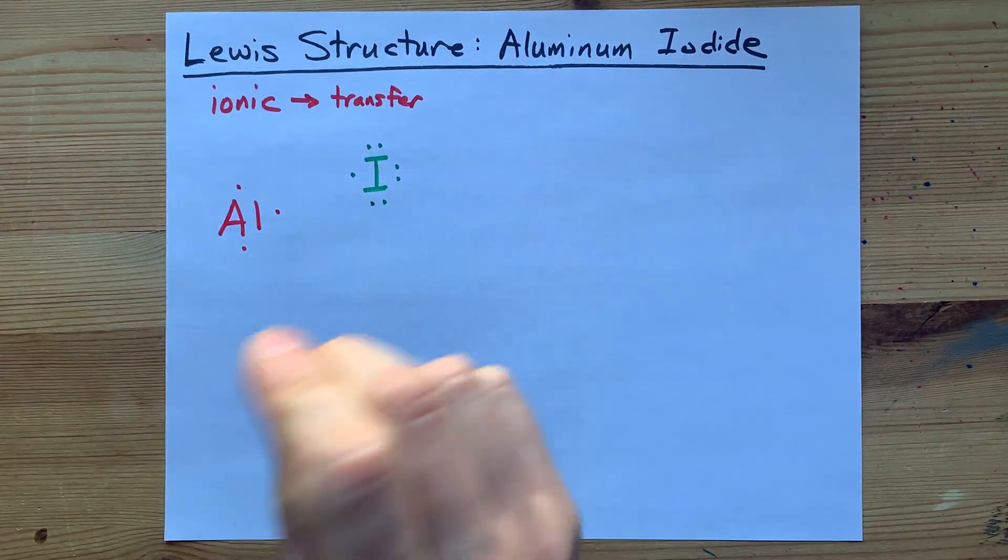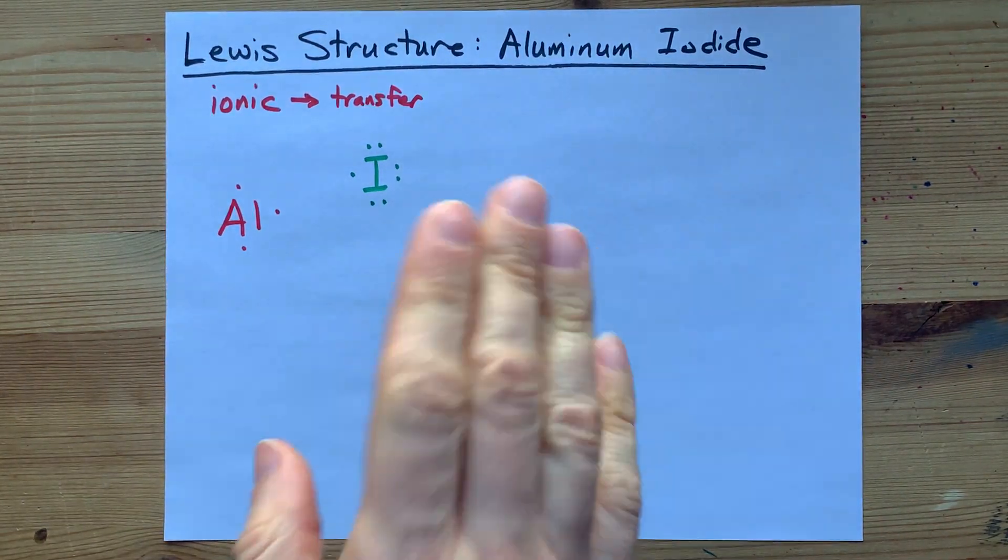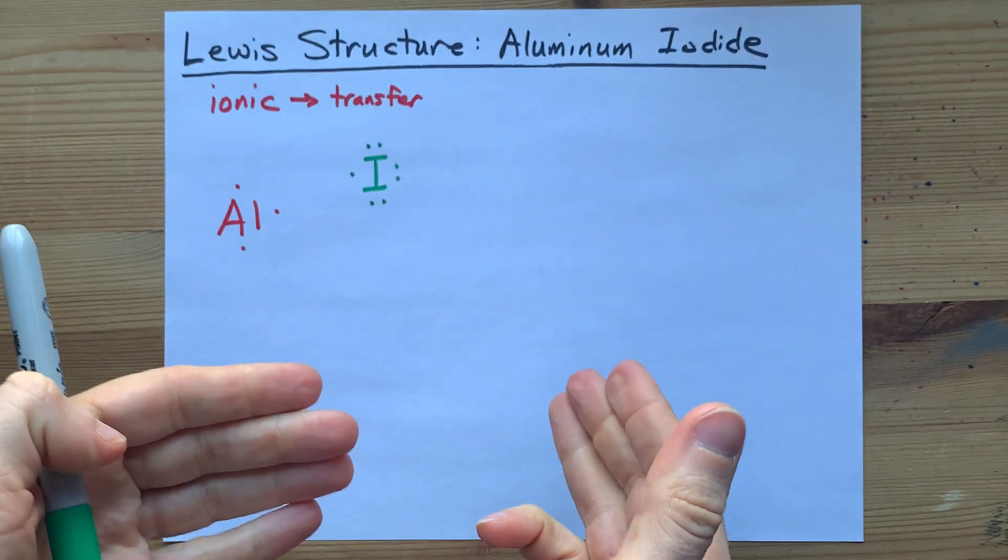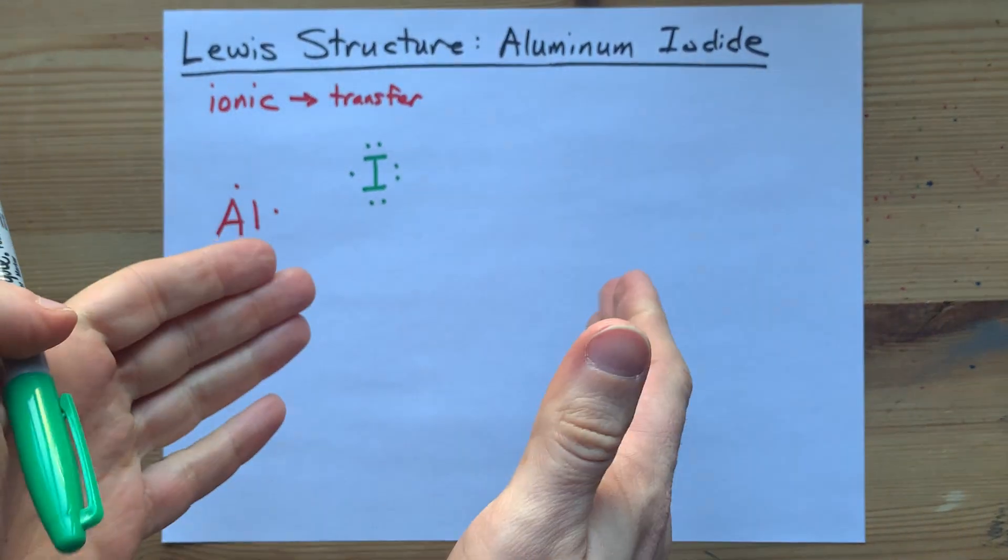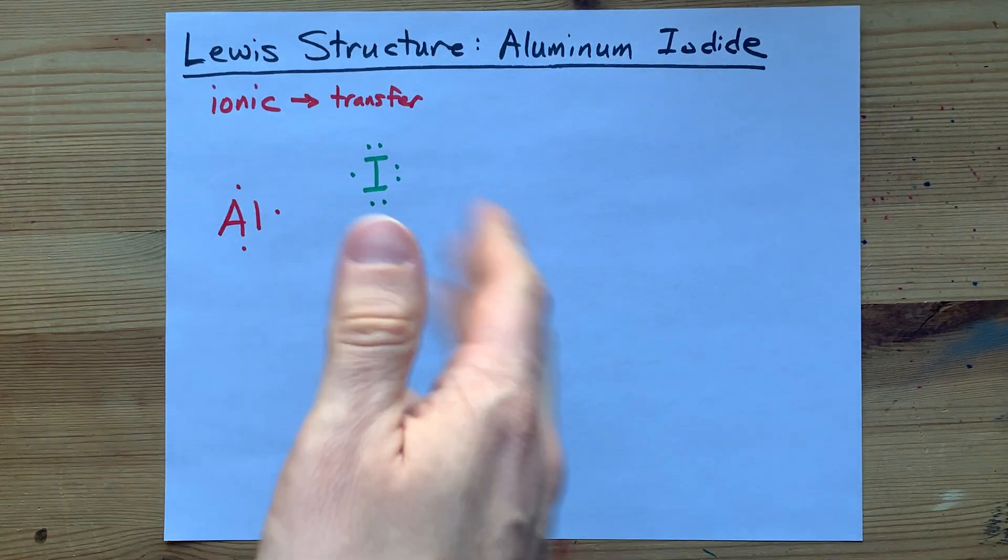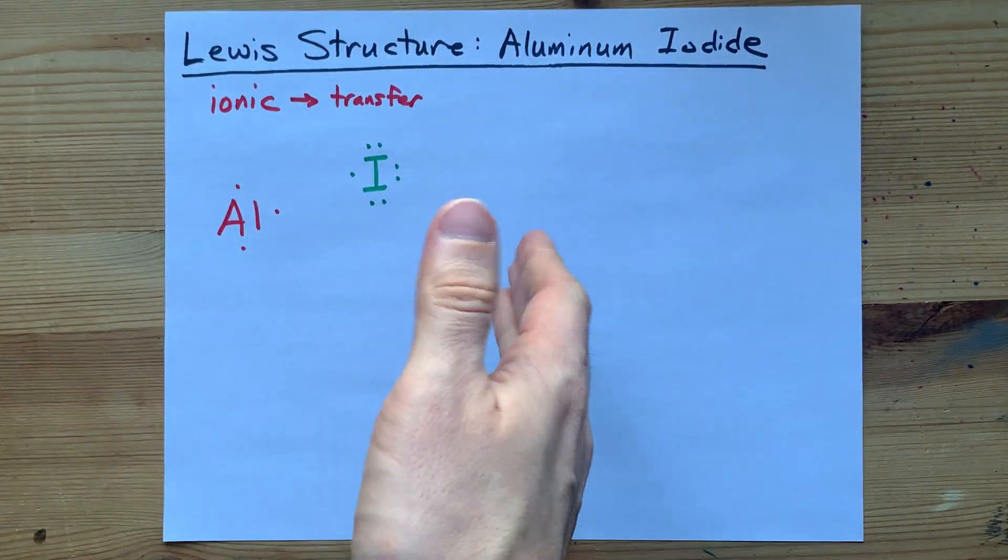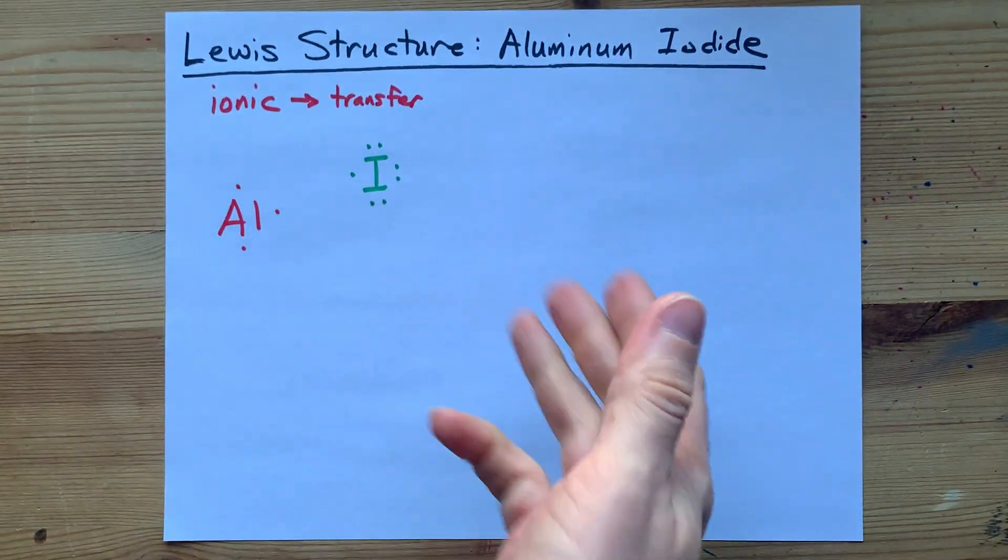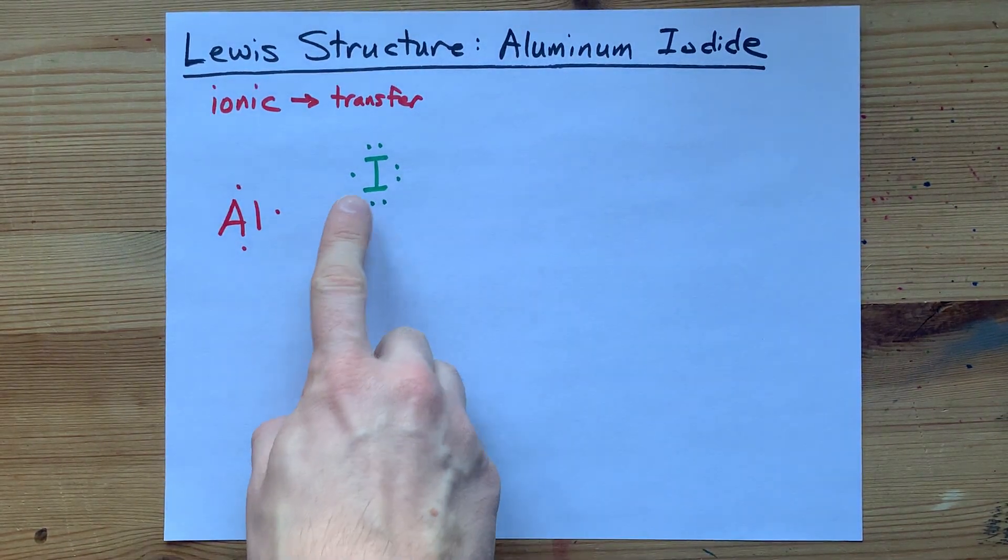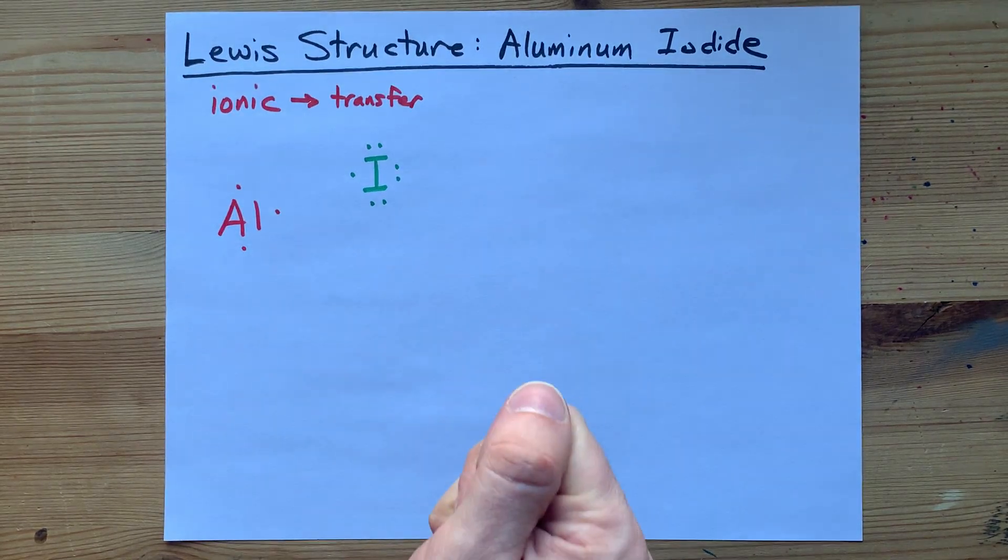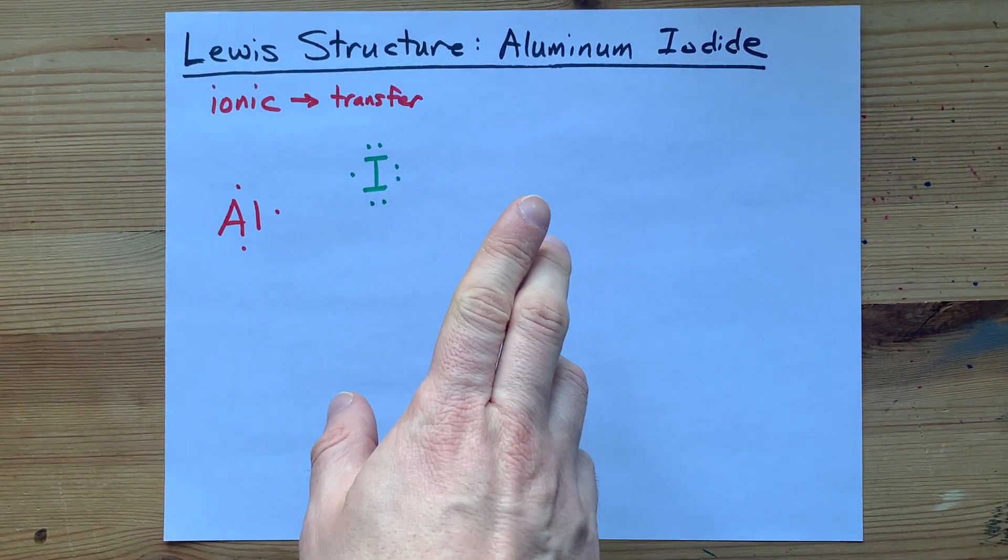Now, non-metals want eight electrons in their outer shell. It's called the octet rule. It's what makes them stable. And the reason is it makes them feel similar to a noble gas, which are the atoms that are already stable on the periodic table. So, how can iodine, which brought seven electrons with it, get an eighth?